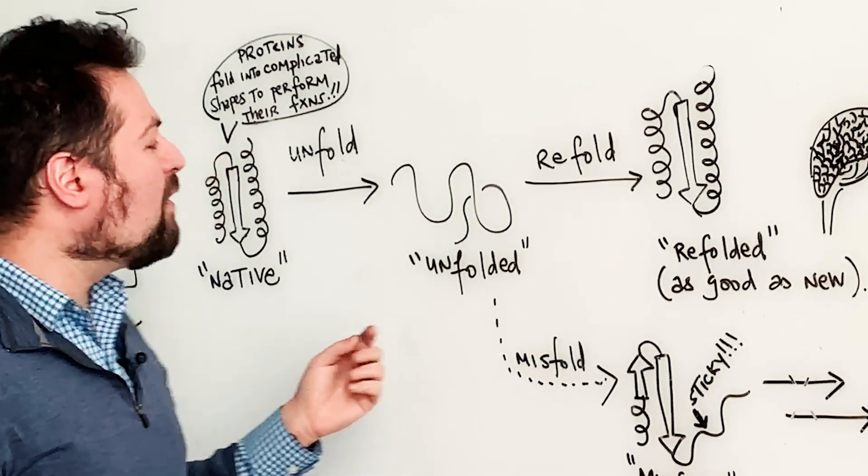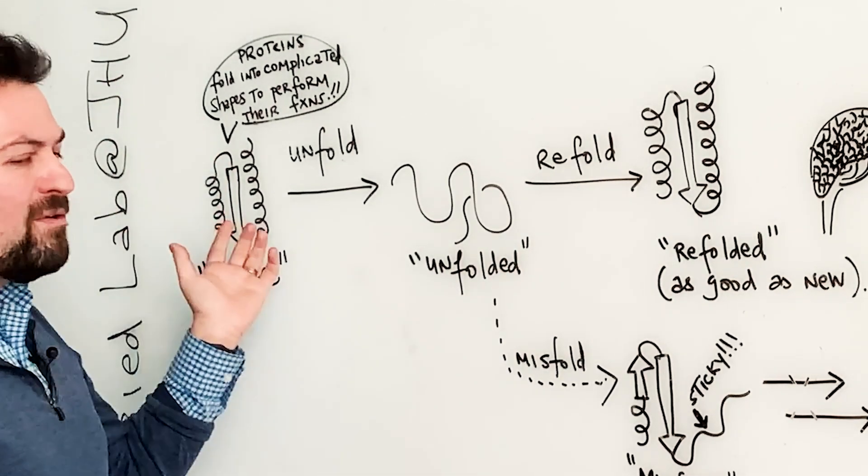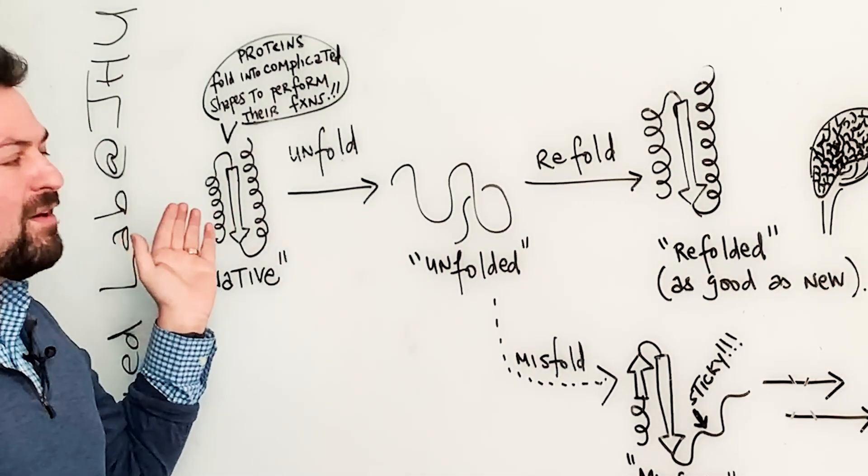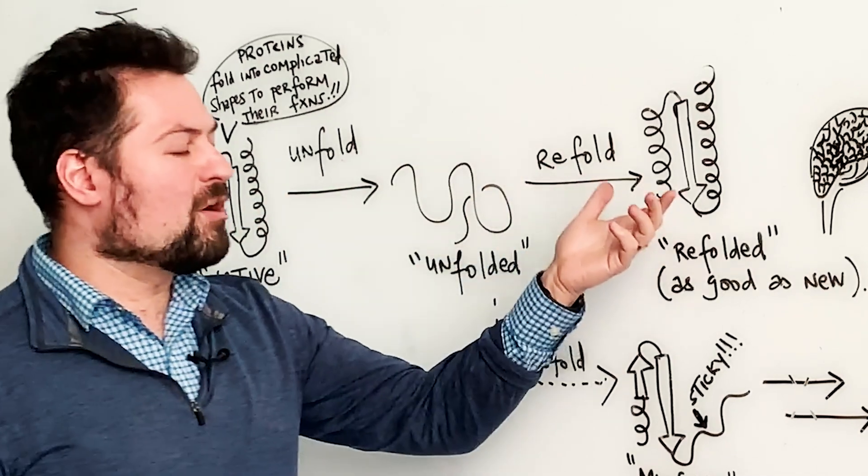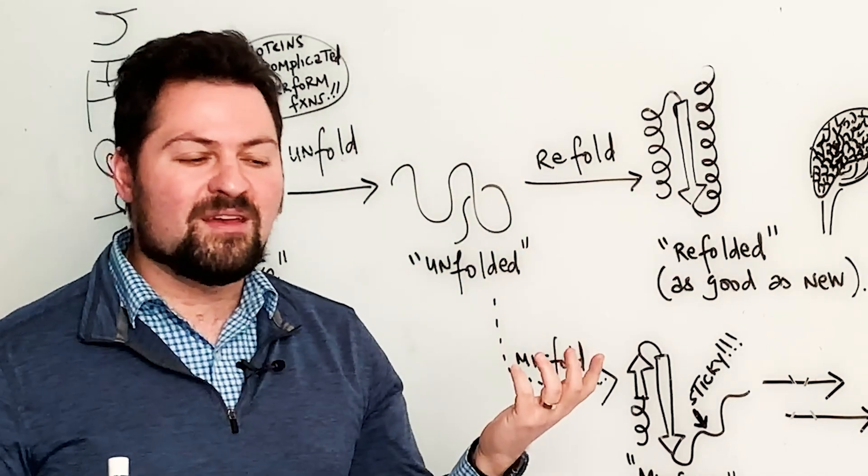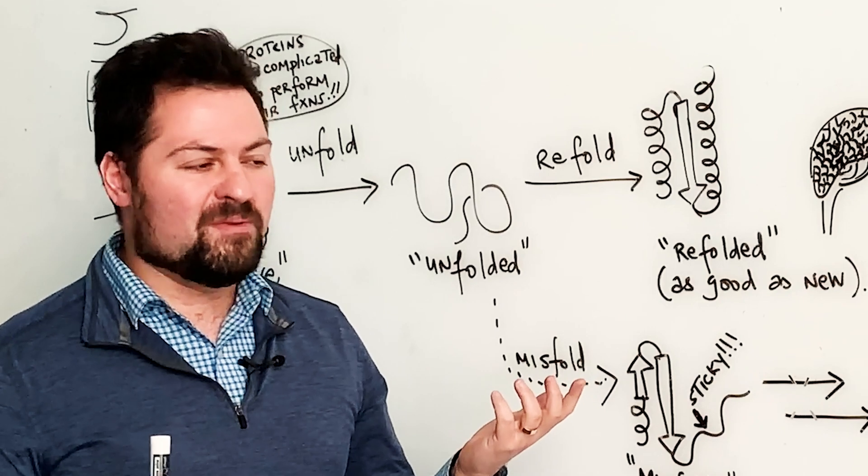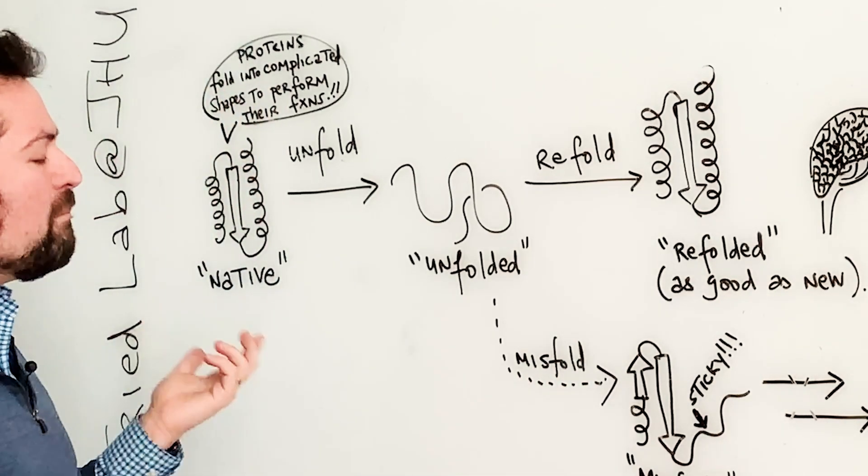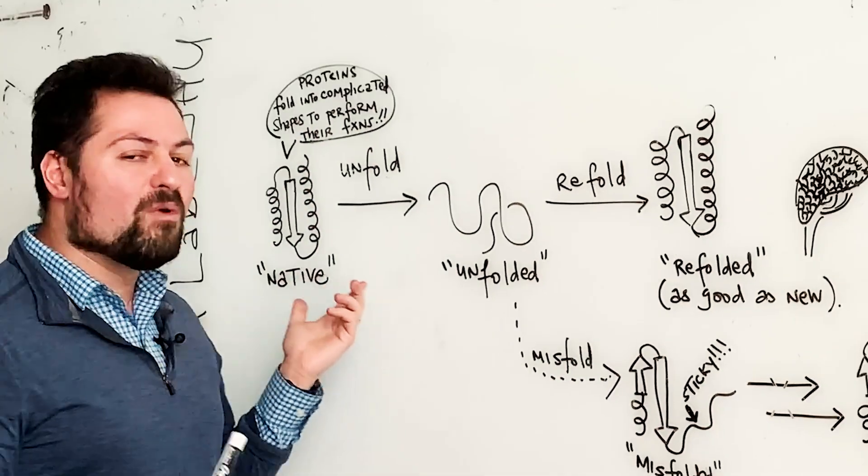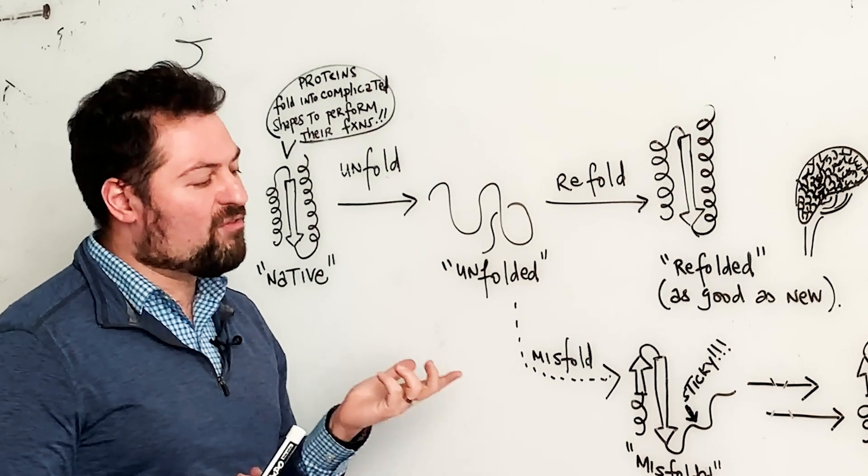And it turns out that for small, simple proteins, they are really good at snapping back into their original shape, no matter what you did to unfold them in the first place. And that discovery was so important that Christian Anfinsen won the Nobel Prize in the 1970s for describing it.